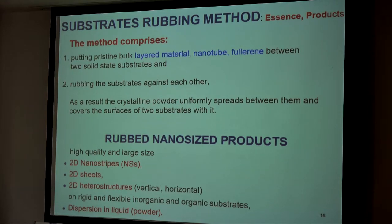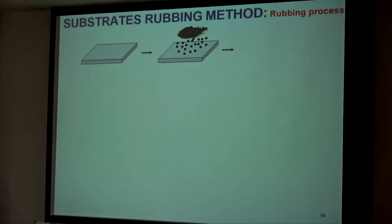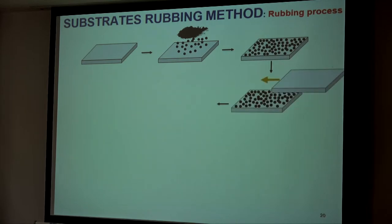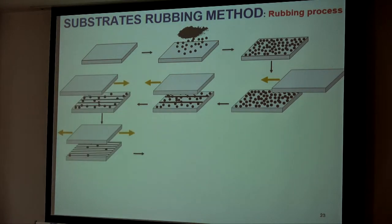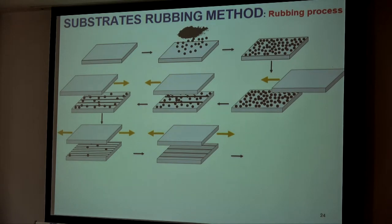Our products include nanostripes, nanosheets, and two-dimensional heterostructures. We can also obtain dispersions in liquid. In the process, we distribute powder on the substrate and then rub two substrates together with a second substrate. You can see that the dots are eliminated, and nanostripes appear on both substrates. With further rubbing, we will have no dots and will have multilayer nanostripes.